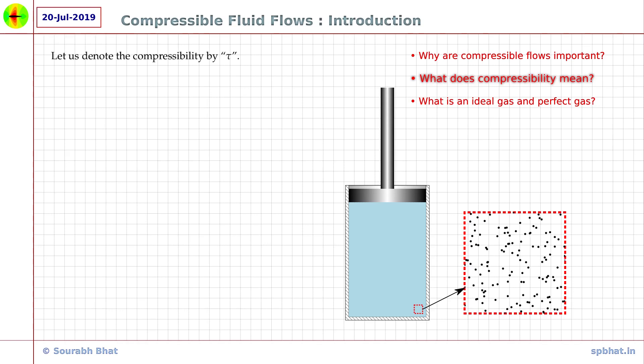Let us denote the compressibility of a fluid by the Greek letter tau. Then, we can write the compressibility of a fluid as tau is equal to fractional change in volume divided by the change in pressure. An increase in pressure will result in decrease in volume and hence the negative sign. We can rewrite this as minus 1 over V times the change in volume by the change in pressure.